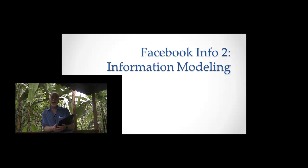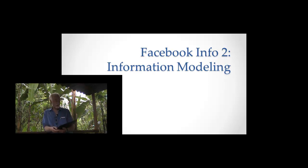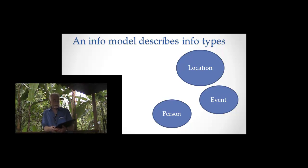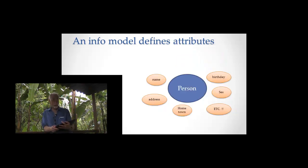This is the idea of modeling the information — we're going to take apart information. I want to give you the components of an information model and talk about how we go about doing this. We had information types, and for Facebook we said there were people, location, and events. For a particular information type, for example a person, we can start to surround it with all the different attributes that a person has.